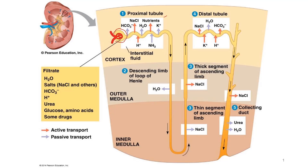The first processes occur in the proximal tubule. Reabsorption in the proximal tubule is critical for the recapture of ions, water, and valuable nutrients from the large volume of initial filtrate, such as sodium chloride. Sodium chloride in the filtrate enters the cells of the transport epithelium by facilitated diffusion and also co-transport mechanisms. As salt moves from the filtrate to the interstitial fluid, water follows by osmosis.